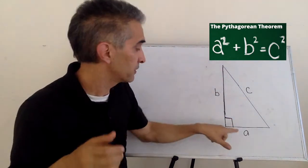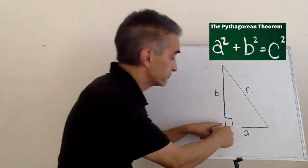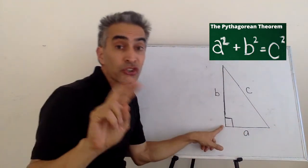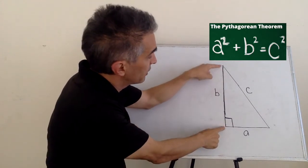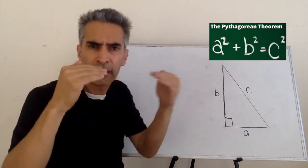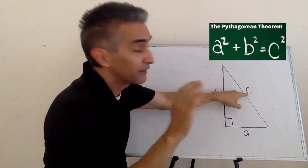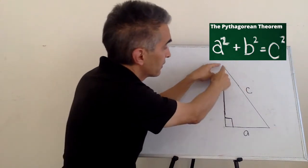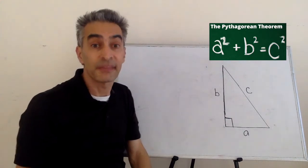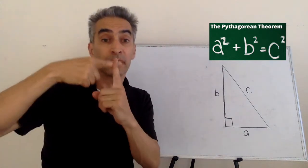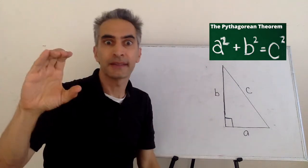What does this formula say? A, this line squared, plus B, that's this line right here, squared, equals C, this line right here, squared. A squared plus B squared equals C squared.